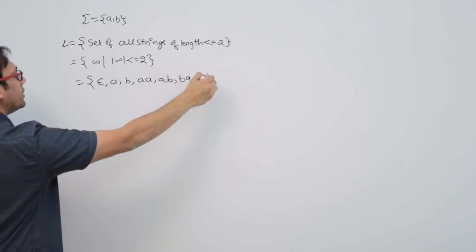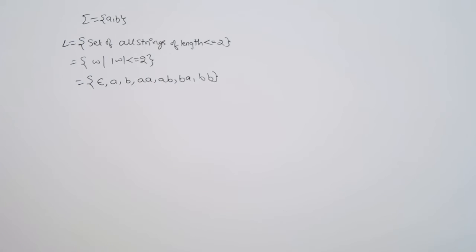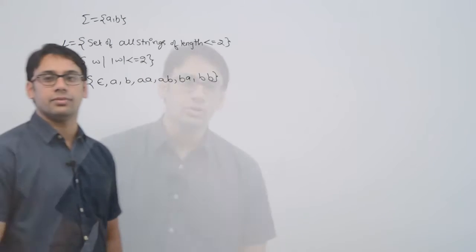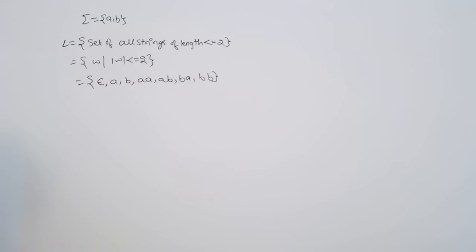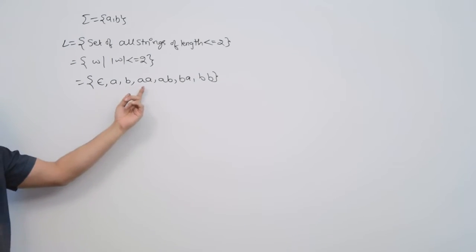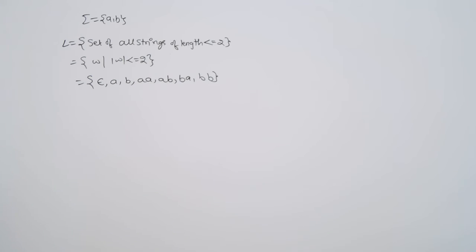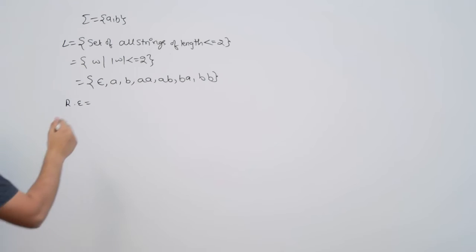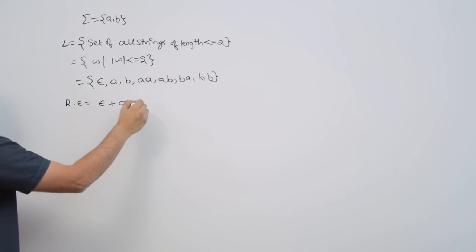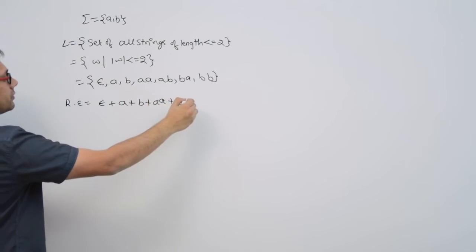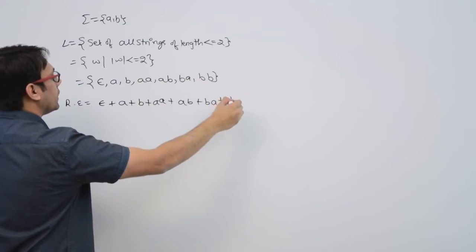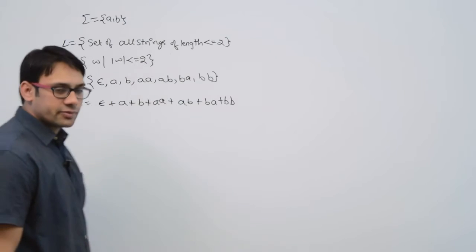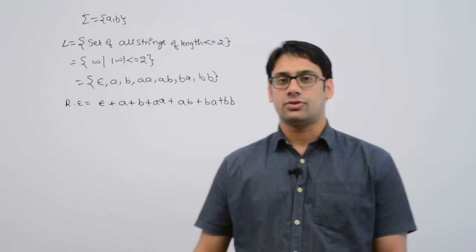So for the language of all strings of length less than or equal to 2, the strings are: epsilon, a, b, aa, ab, ba, and bb. If you make a regular expression for this, you are going to take a union of all of them, so it will be represented by: epsilon + a + b + aa + ab + ba + bb.